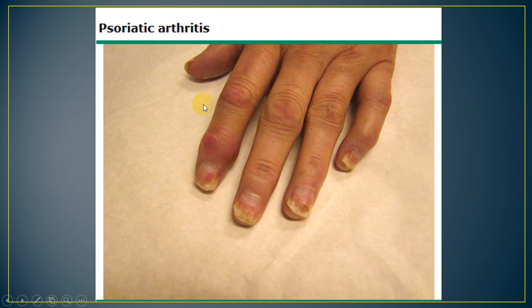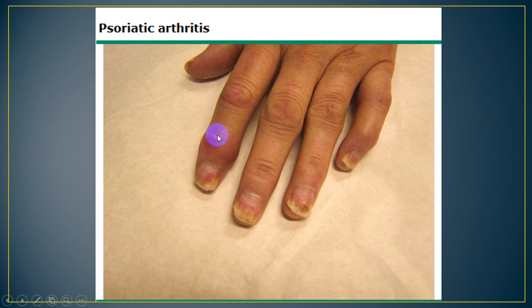This is a hand of a patient with psoriatic arthritis — we see involvement of multiple small joints. In rheumatoid arthritis, as you remember, the distal interphalangeal joint is preserved, so involvement of the distal interphalangeal joint should exclude rheumatoid arthritis and prompt another diagnosis. In this patient, distal interphalangeal joint involvement with typical nail changes of psoriasis makes the diagnosis of psoriatic arthritis very likely.